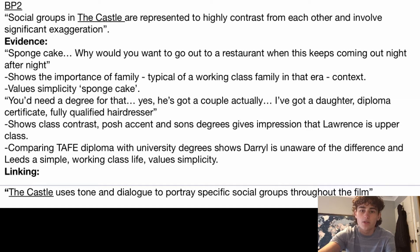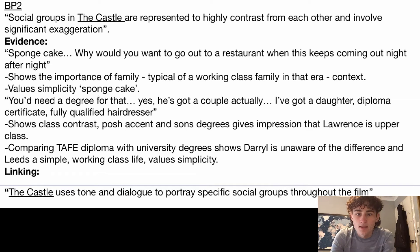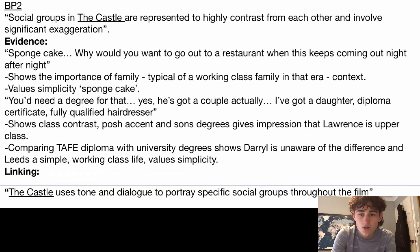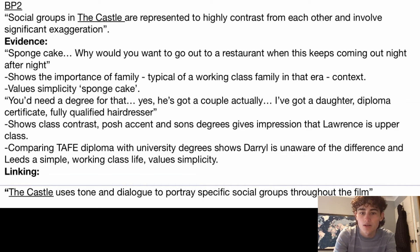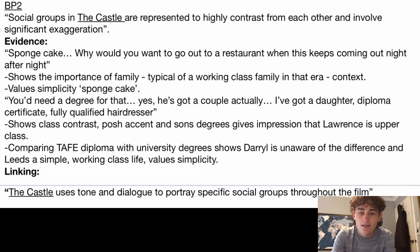To start off our second body paragraph, the topic sentence is: social groups in The Castle are represented as highly contrasting from each other and involve significant exaggeration. Our first piece of evidence is: 'Sponge cake — why would you not want to go out to a restaurant when this keeps coming out every night?' This quote shows the importance of family, which is typical of a working class family in that era, and shows they value simplicity. Our second quote — 'You need a degree for that? Yes, he's got a couple actually. Diploma certificate — fully qualified hairdresser' — shows class contrast. A posh accent and a university degree give the impression Lawrence is upper class, while comparing a diploma with a university degree shows Daryl is unaware of the difference and leads a simple working class life. Our linking sentence: The Castle uses tone and dialogue to portray specific social groups throughout the film.